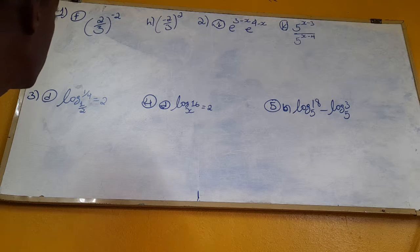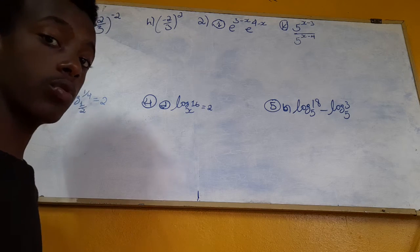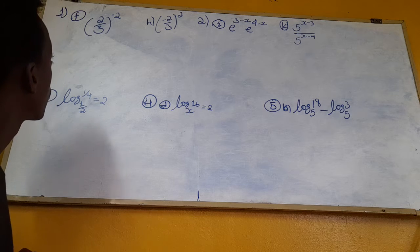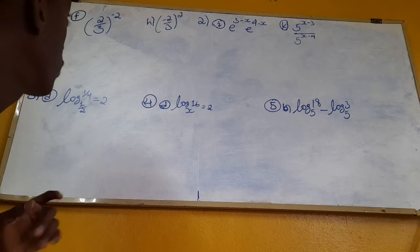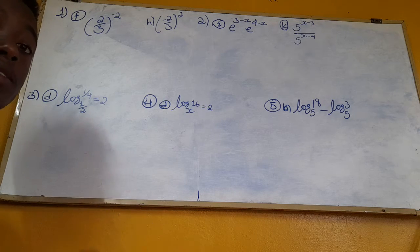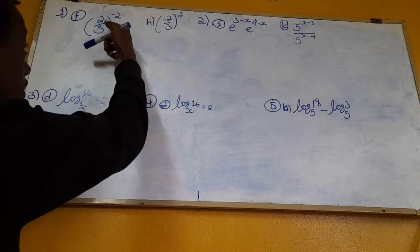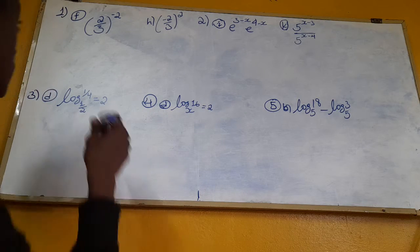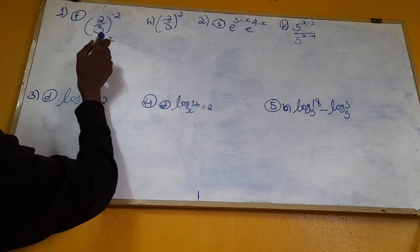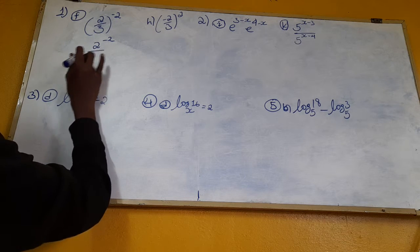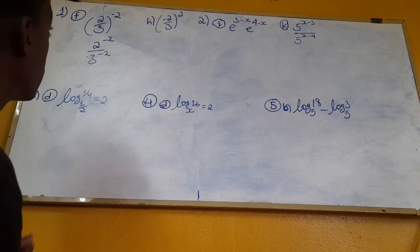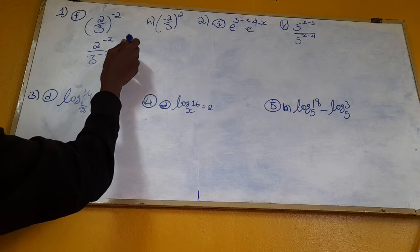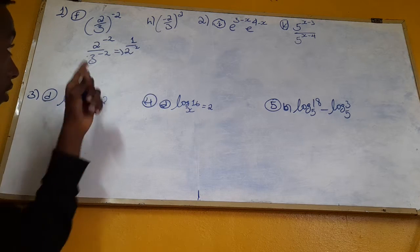First question: (2/3) to the whole power of minus 2. Using the exponential rule, we apply the power of minus 2. So 2 over 3, the whole to the power of minus 2. 2 to the power of minus 2 over 3 to the power of minus 2. 2 to the power of minus 1 is 1 over 2 squared. This is the exponential rule.